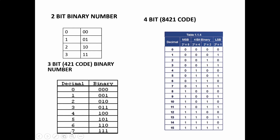Octal numbers are 0 to 7. Since 8 = 2³, we use 3-bit binary for octal digits using the 4-2-1 code: 0=000, 1=001, 2=010, 3=011, and so on up to 7. For 4-bit we use the 8-4-2-1 code, which covers 0 to 15, corresponding to hexadecimal digits.